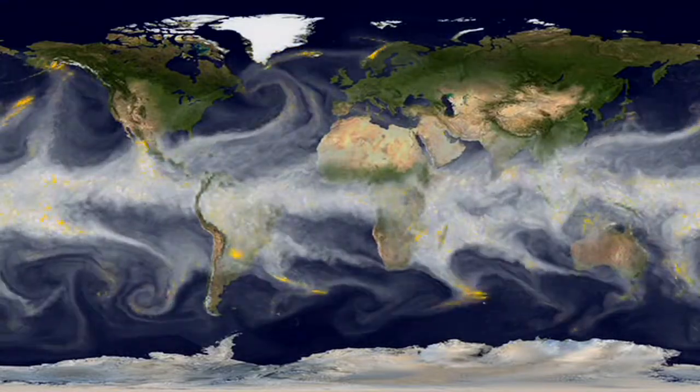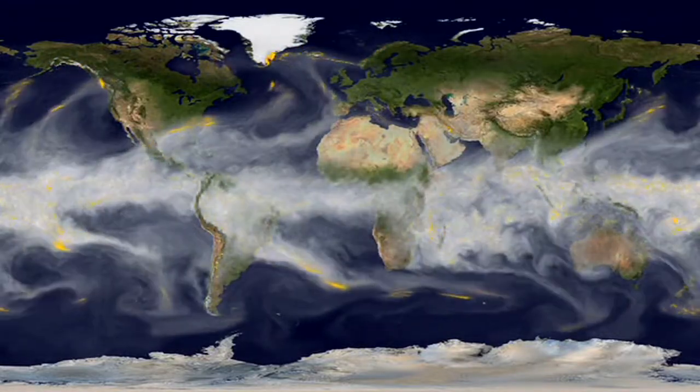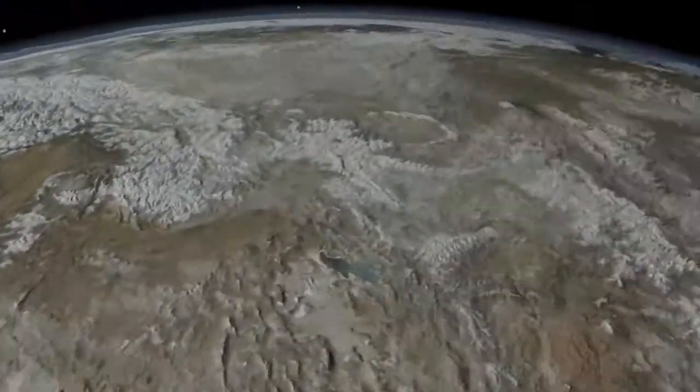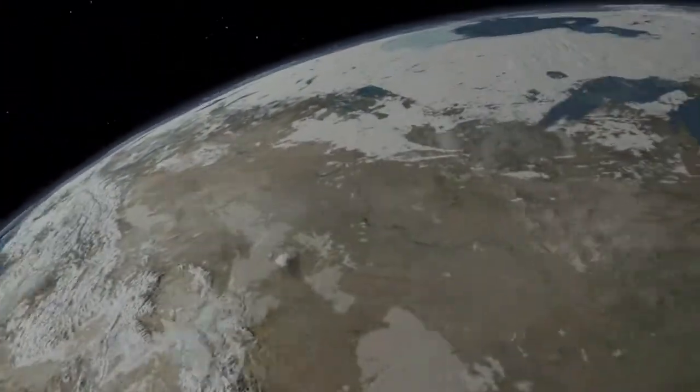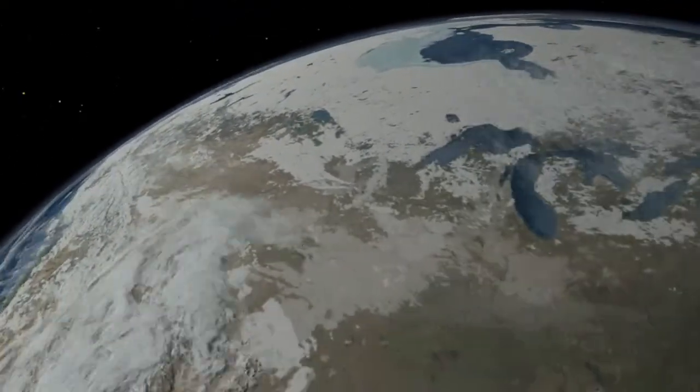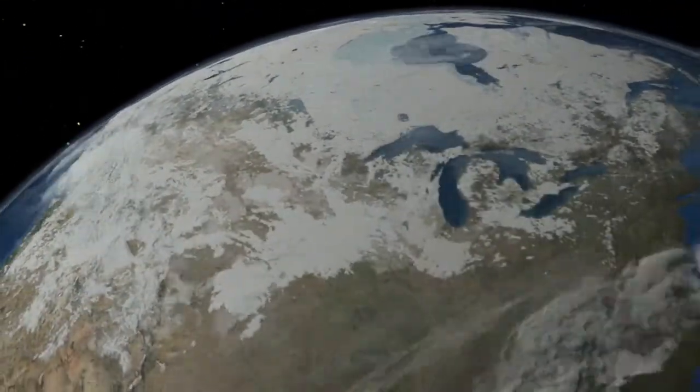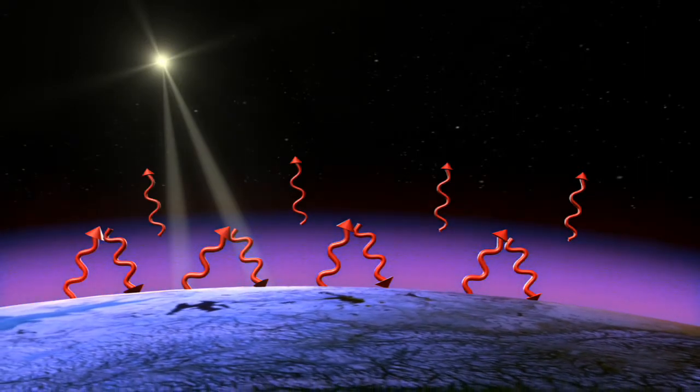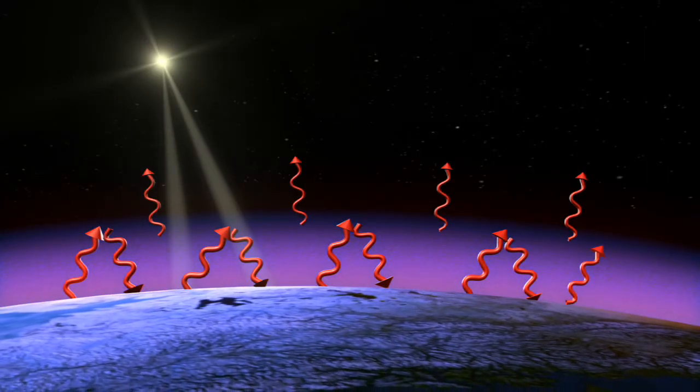Further complicating the issue is that water vapor is actually the world's most abundant greenhouse gas. That's right, the same molecules that might cool the planet in cloud form actually warm it when they're in the form of a gas. They help create a blanket around the Earth, catching heat radiating from the planet's surface and trapping it within the atmosphere.